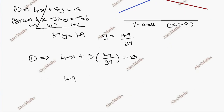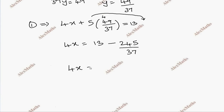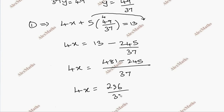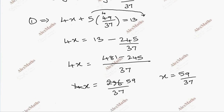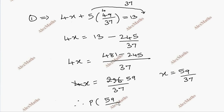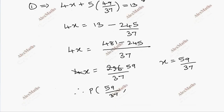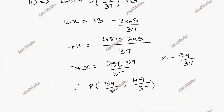Substituting y into the first equation: 4x plus 5 times 49 by 37 equals 13. So 4x equals 13 minus 245 by 37, which gives 481 minus 245, so 4x equals 236 by 37. Therefore x equals 59 by 37. So the point P is (59 by 37, 49 by 37).